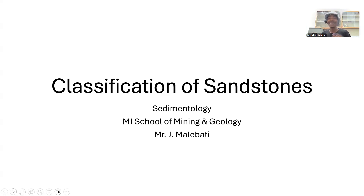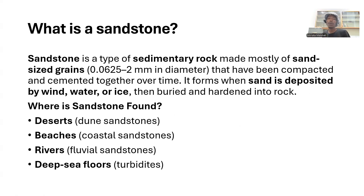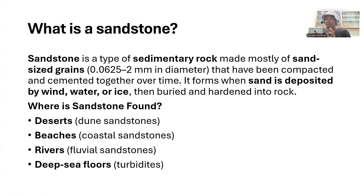Sandstone is a type of sedimentary rock made mostly of sand grains that have been compacted and cemented together over time. It forms when sand is deposited by wind, water, or ice and then buried and hardened into rock. The sandstone formed in a desert environment will be very fine-grained compared to the one formed by water.